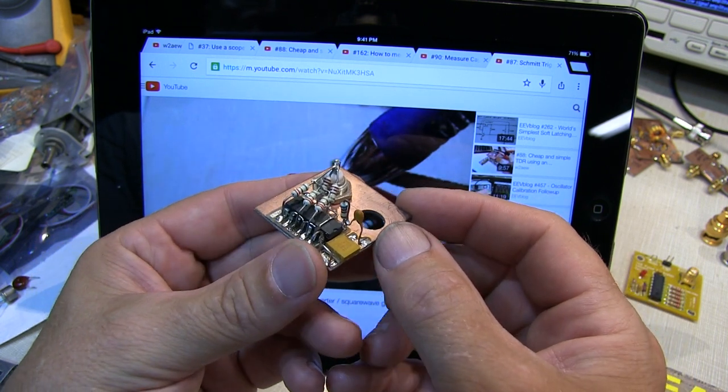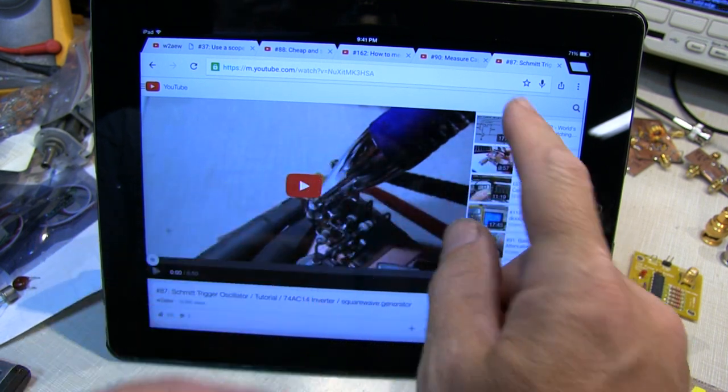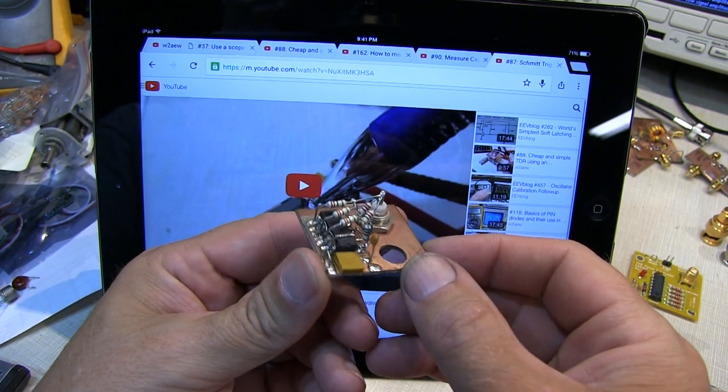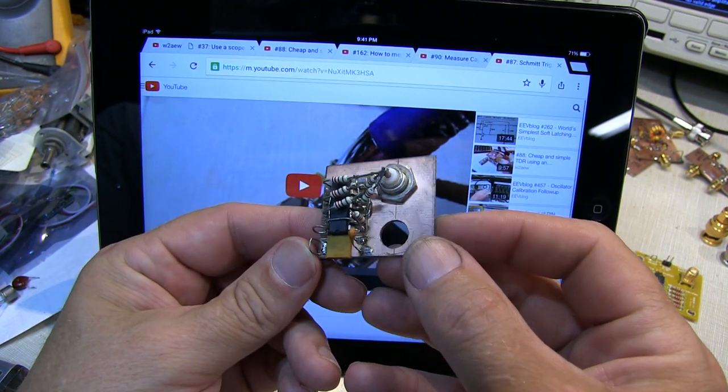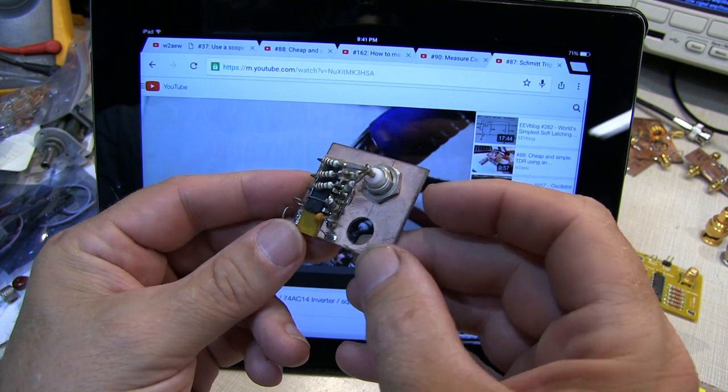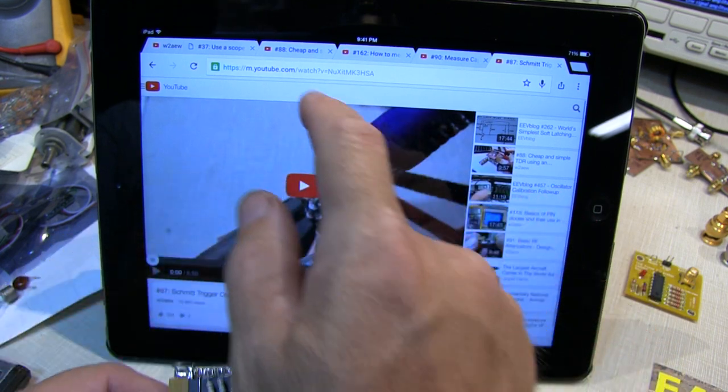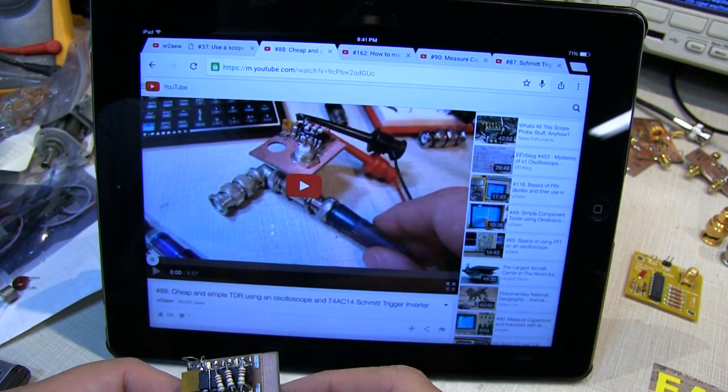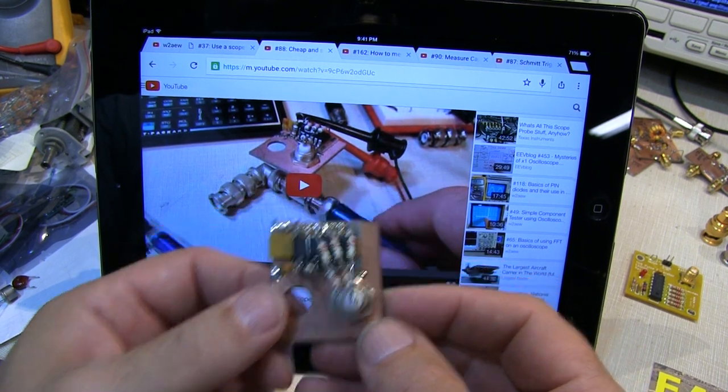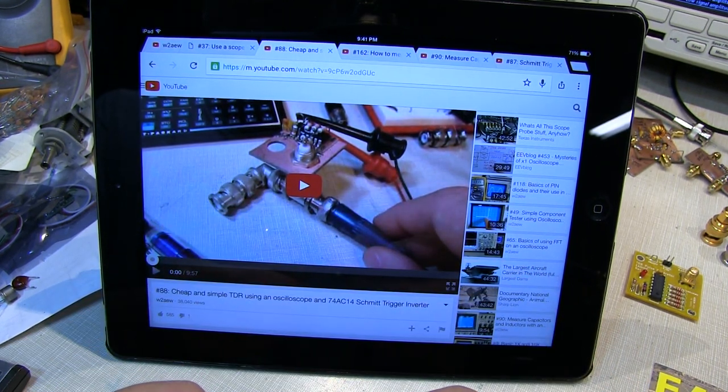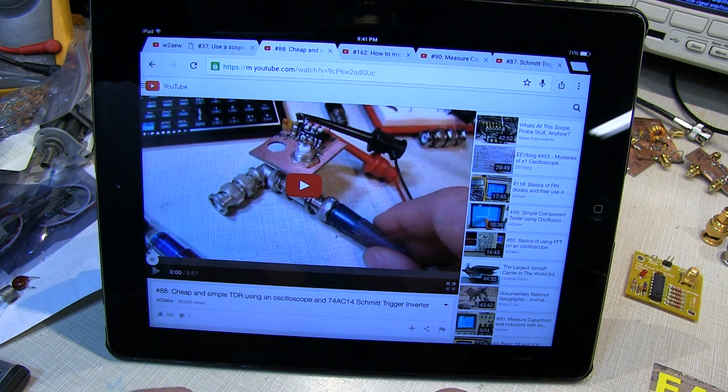This oscillator was featured initially in video number 87 that described how the oscillator works and how you can build your own. And it was also featured in the next video, number 88, which showed how to use this oscillator to do a very cheap and easy time domain reflectometer to measure coax.